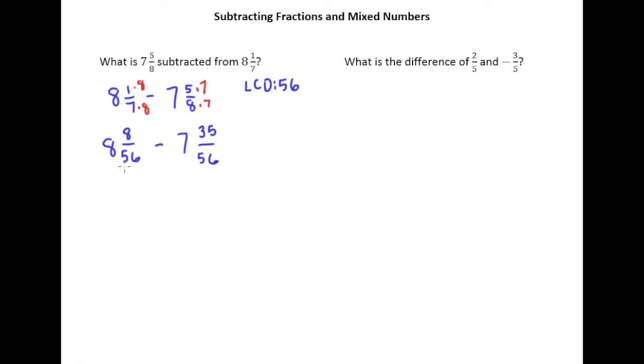So we just simply want to make this fraction part bigger. And so remember that the strategy is we're going to turn the 8 into a 7, the whole part into a 7, because we're borrowing 1 from the whole number. And remember that that one whole is equal to 56 over 56.